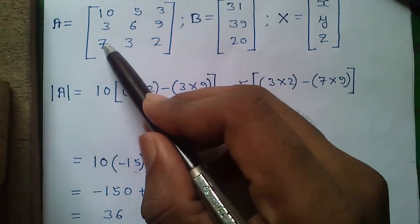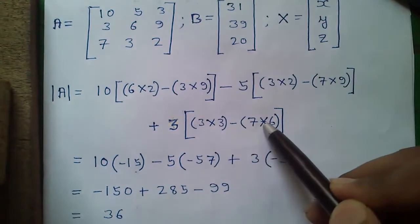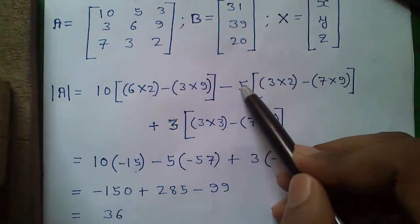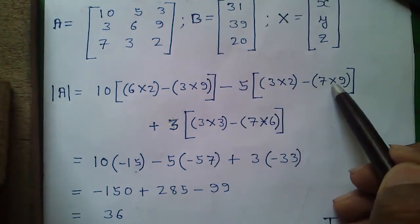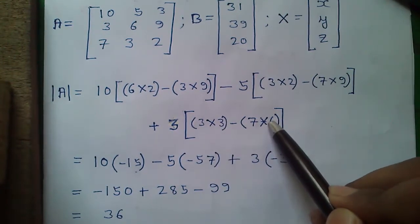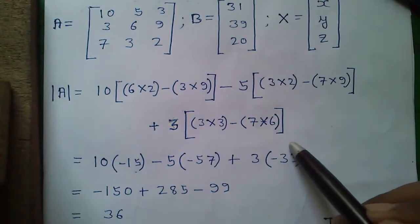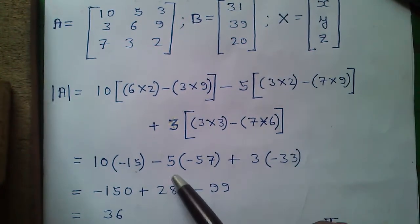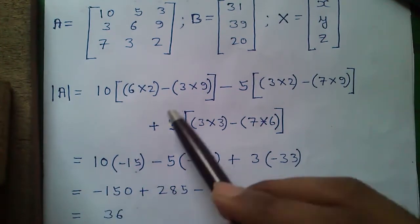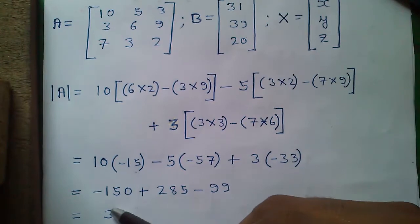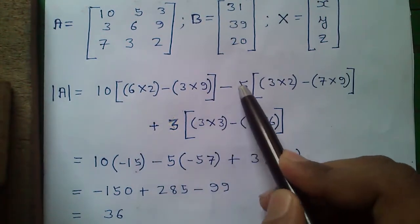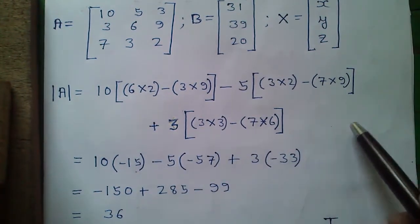So that gives us: 10×(12−27) = 10×(−15) = −150, minus 5×(6−63) = −5×(−57) = +285, plus 3×(9−42) = 3×(−33) = −99. Therefore: −150 + 285 − 99 = 36. The determinant of matrix A is +36. Remember the alternating order of plus and minus while finding the determinant.